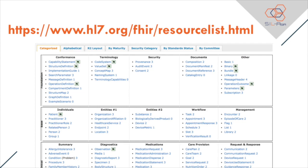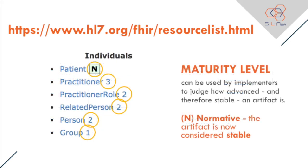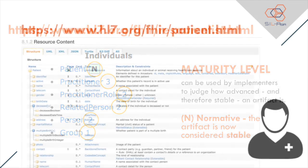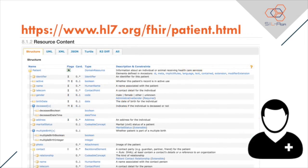Resources are categorized in different ways. Looking into the list of resources, you may notice a number or the letter N beside the resource name — this is the maturity level of the resource. Maturity level ranges from draft, 1 through 5, and normative. N means normative: the artifact is considered stable and you can be sure that minimum to no changes will be made for the next releases. It's a guide for implementers to judge how advanced or stable the resources are. Here is a sample specific resource — a most common one — Resource Patient. You will see a tree structure of the elements under the resource, with data types, descriptions, and constraints.